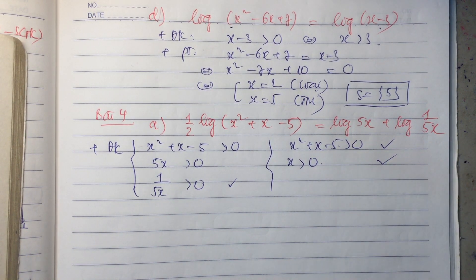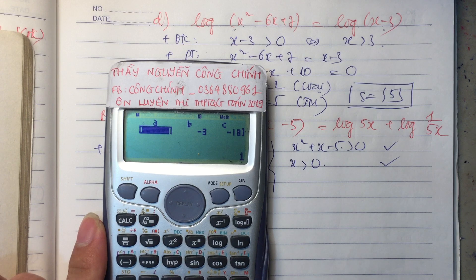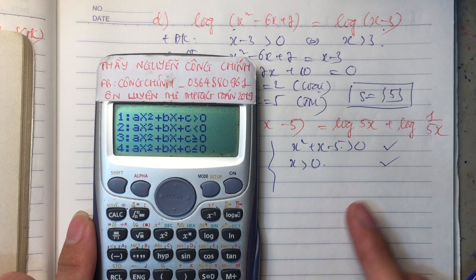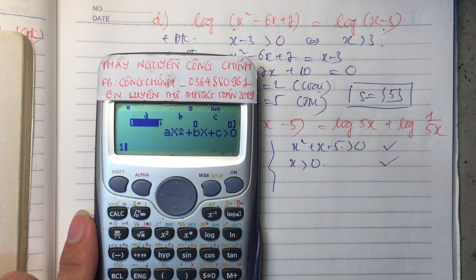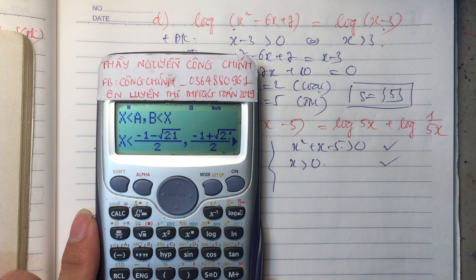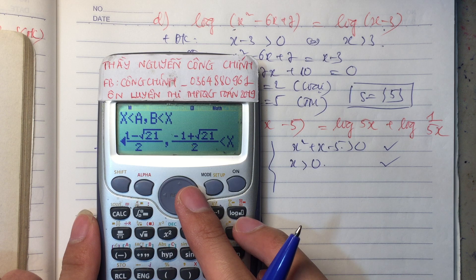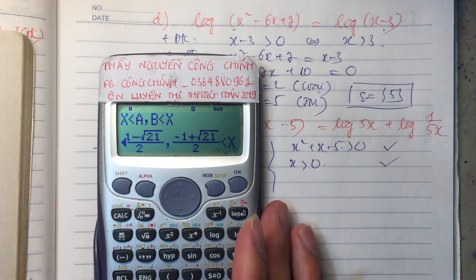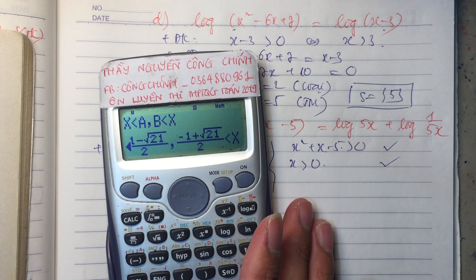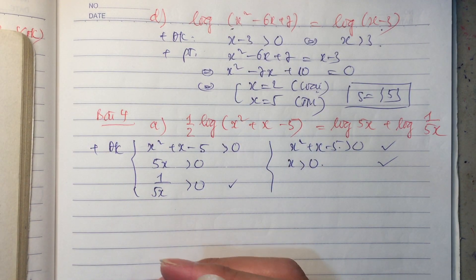Cái điều kiện x bình phương cộng x trừ 5 lớn hơn 0 thì nghiệm xấu lắm, để nguyên đi, tí nữa làm xong ta thay vào là xong. Phương trình tương đương với: nếu muốn đưa về dạng log_A(F) = log_A(G), thì 1 phần 2 hất lên đầu thành mũ. Mũ 1 phần 2 thì bản chất là căn bậc 2. Như vậy thầy viết thành căn bậc 2 của (x bình phương cộng x trừ 5).